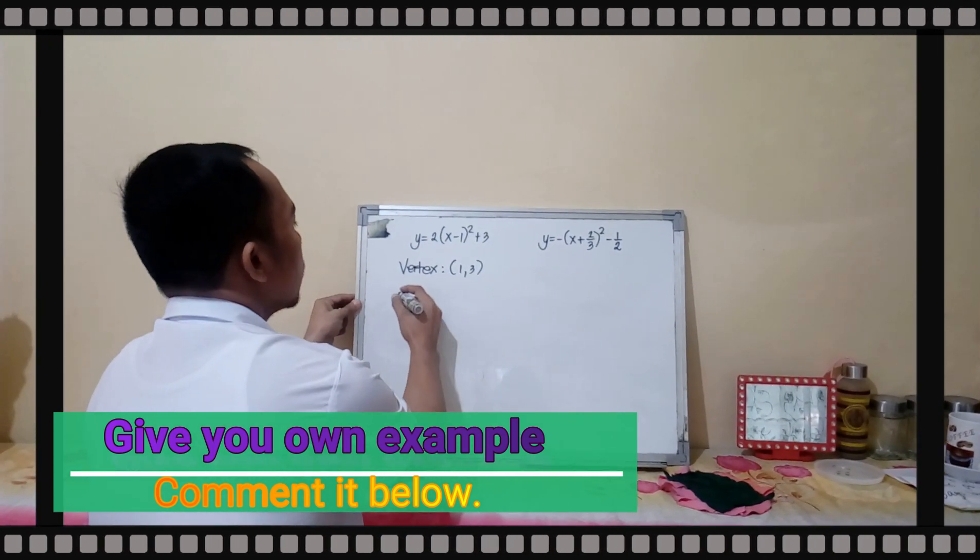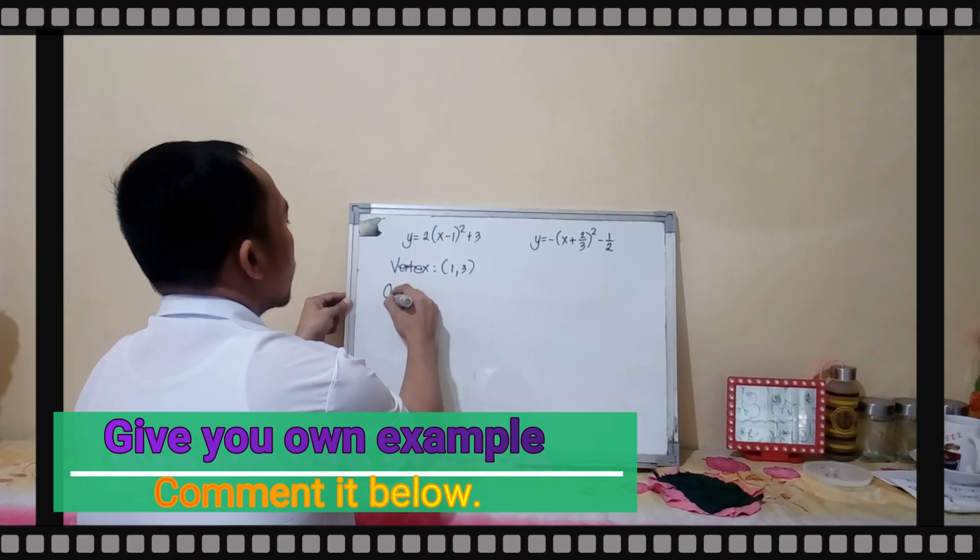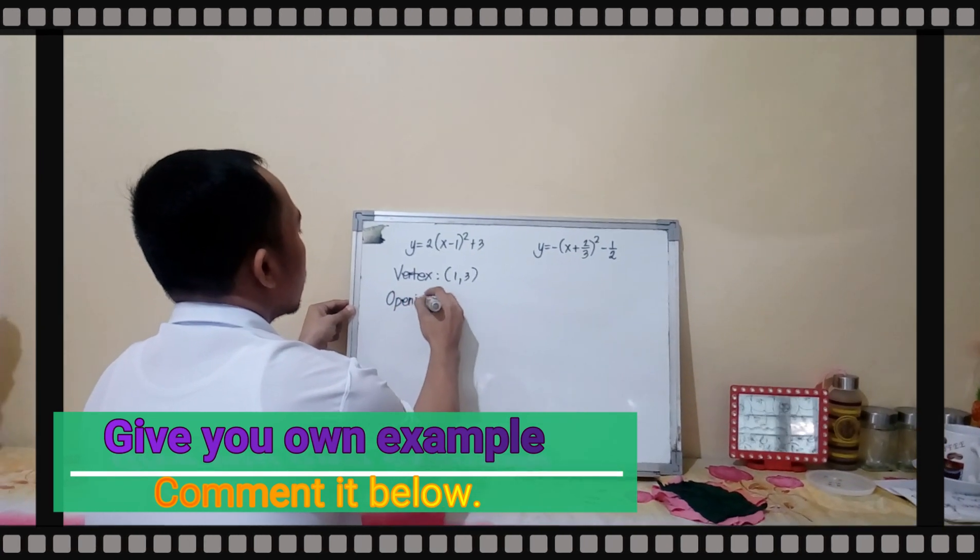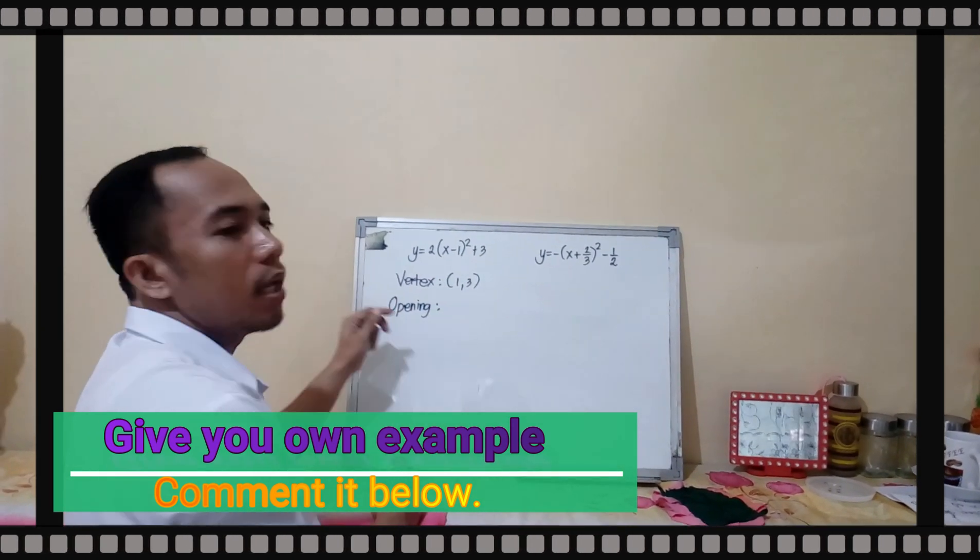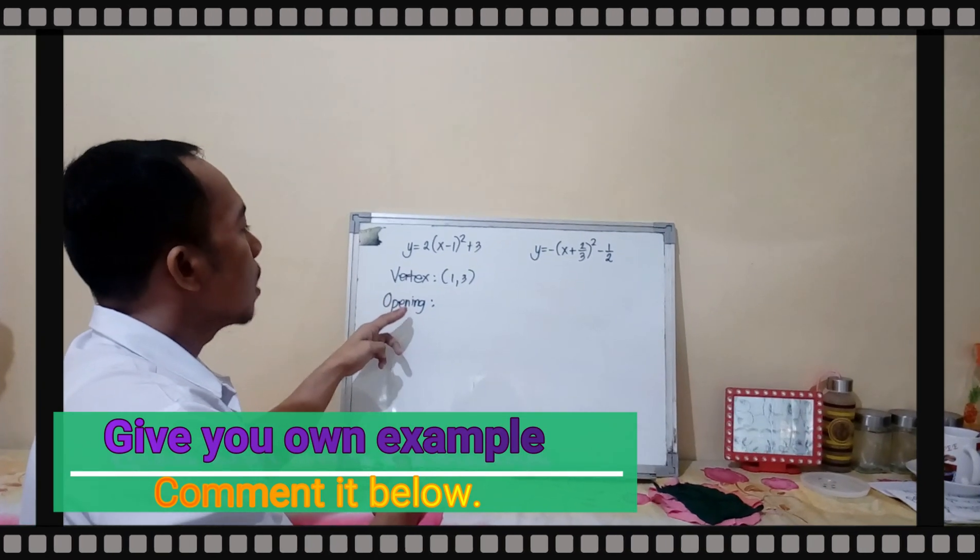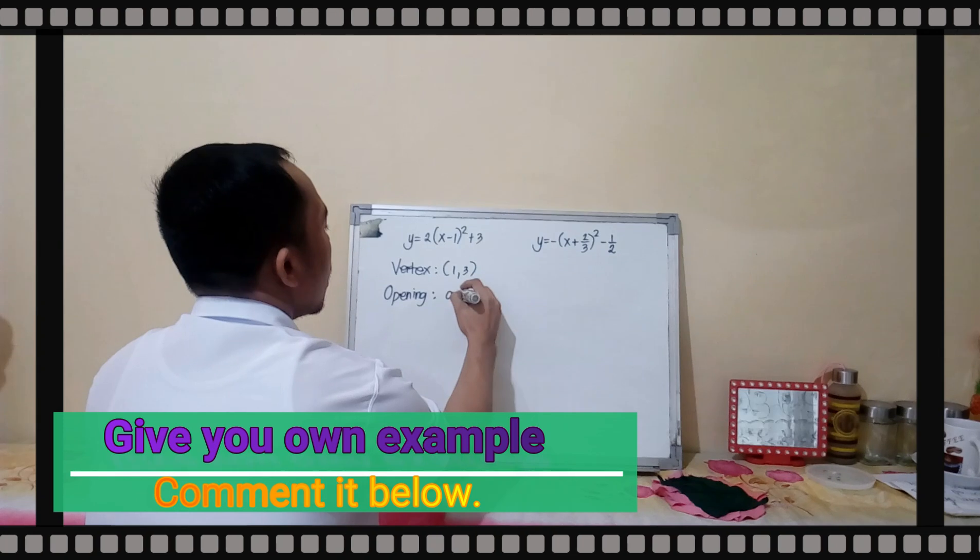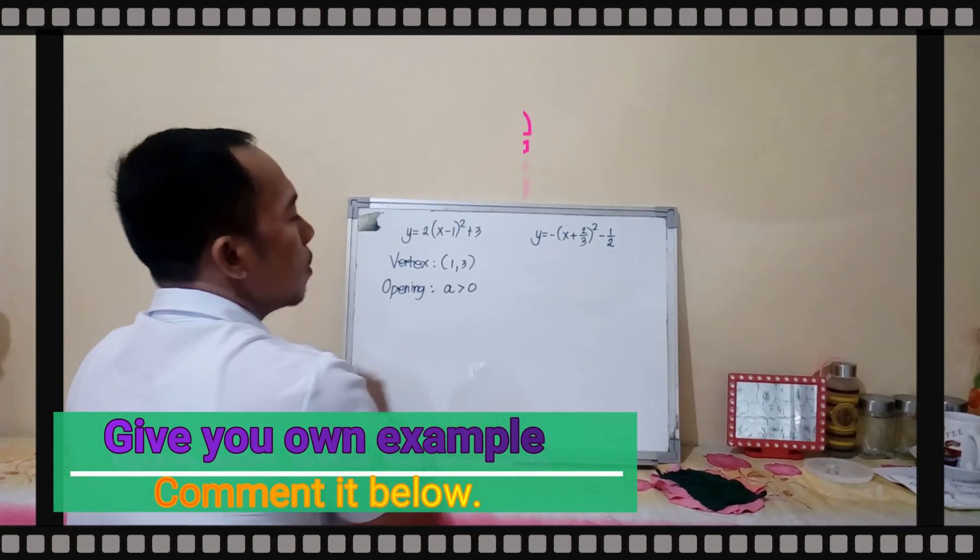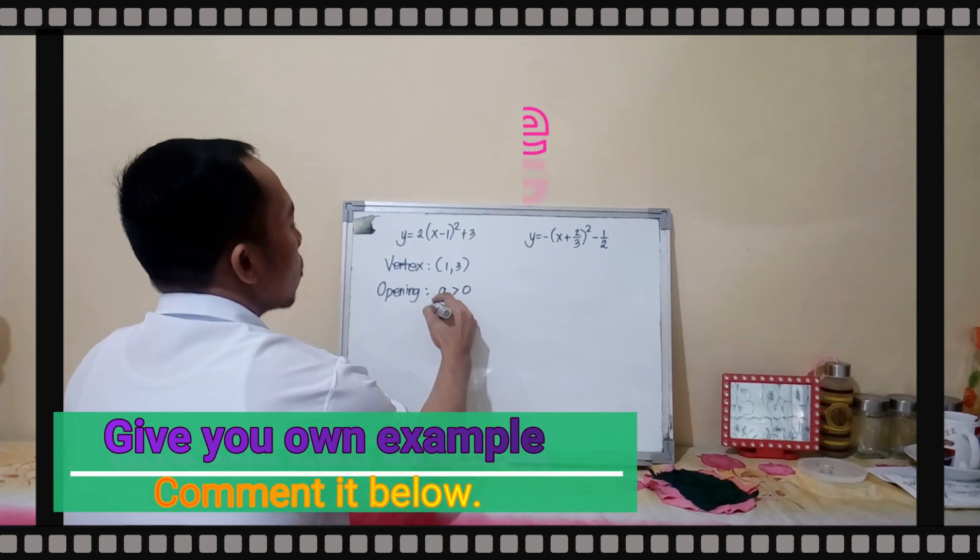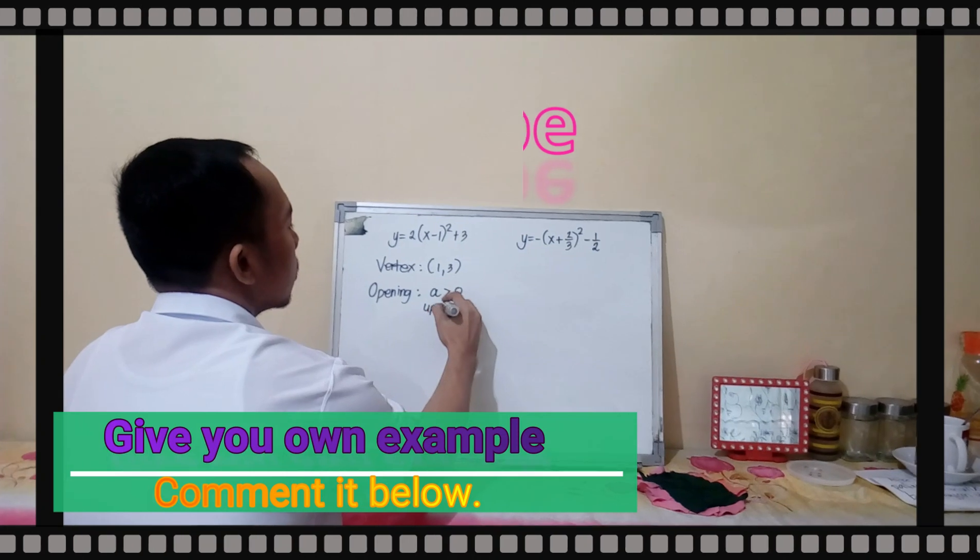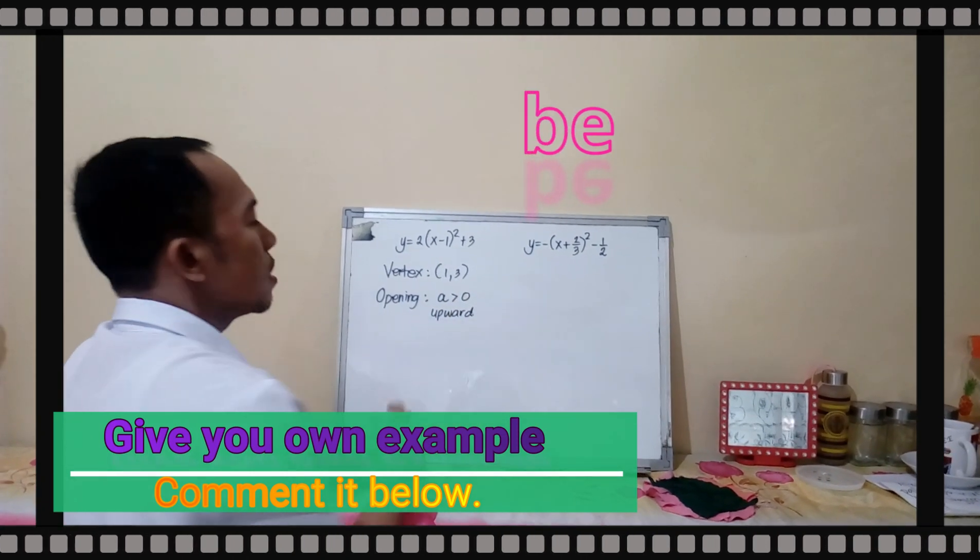Aside from the vertex, you can also get the opening of the parabola. The opening of the parabola is upward because your A is positive. If your A is greater than 0, then it opens upward. The opening is upward.